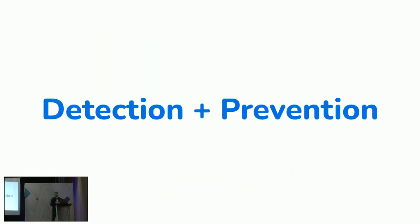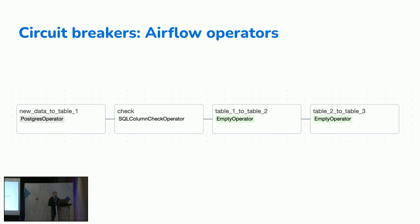We're going to talk about detection and prevention. The main concept when we think about detection and prevention is circuit breakers. Here is an example using Airflow operators — a pretty simple example. We have new data coming into table one, we check the quality of this data, and if quality is good, we're going to transform this data and include it in table two and table three.